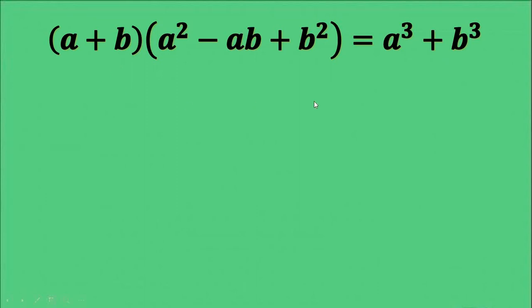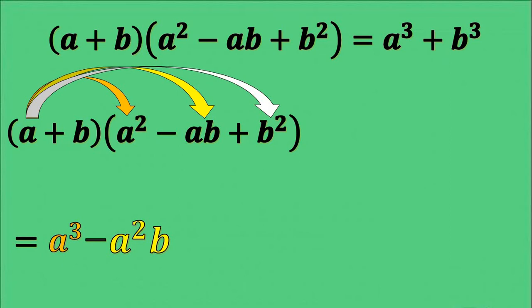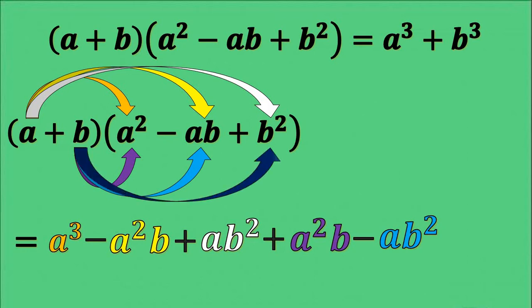Now let us verify that shortcut using the distributive property of multiplication. a times a squared gives a cubed. a times negative ab gives negative a squared b. a times positive b squared gives plus ab squared. Then b times a squared gives positive a squared b. b times negative ab gives negative ab squared. Lastly, positive b times positive b squared gives positive b cubed.